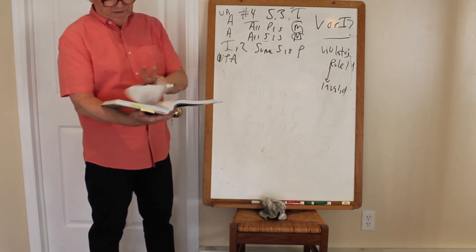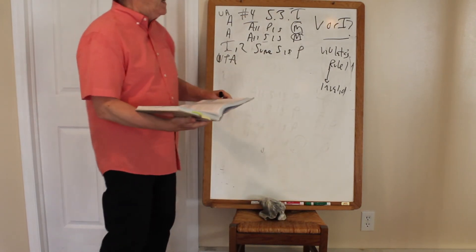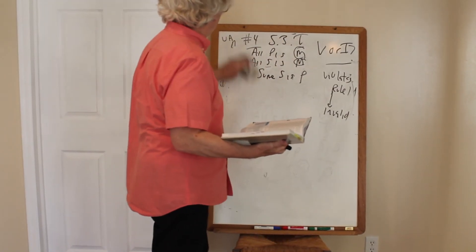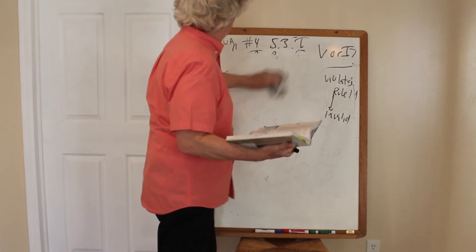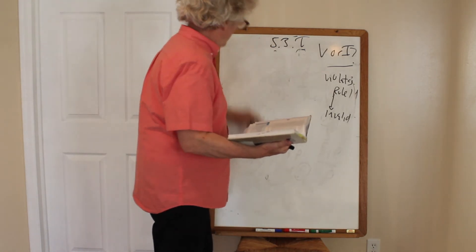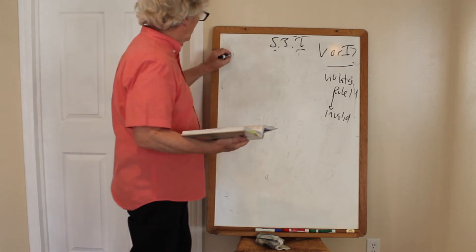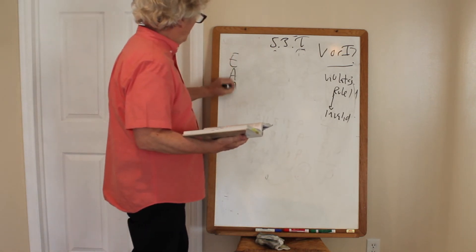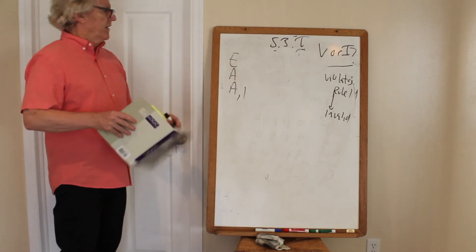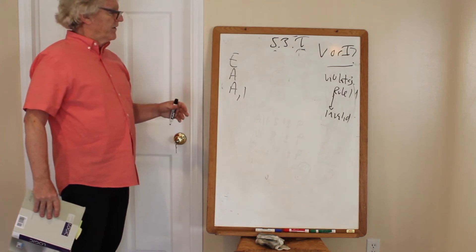Let's try another one — number seven: EAA-1. We're looking at EAA-1: universal negative, universal affirmative, followed by a universal affirmative conclusion.